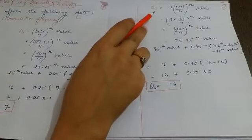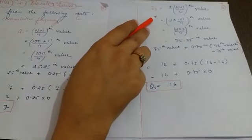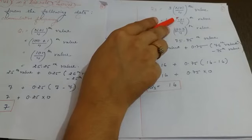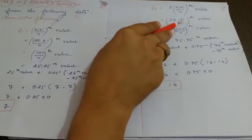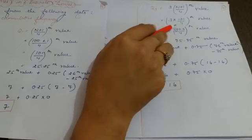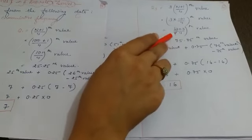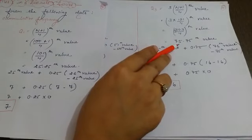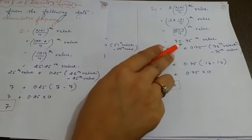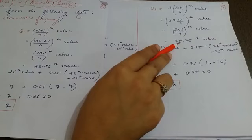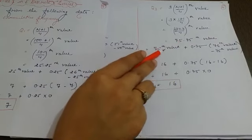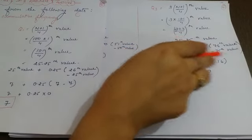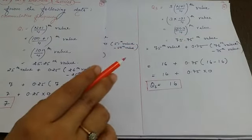Now third quartile. In order to identify the third quartile, you use this formula, that is 3 n plus 1 by 4th value. n plus 1 by 4 ki jo value aani hai, that is 101 by 4. After multiplying it with 3, you will get 303 by 4. It will give 75.75th value. Same, it lies between 75th and 76th value. So substituting over here, 75th value plus the difference that is 0.75 and difference of 76th minus 75th value.